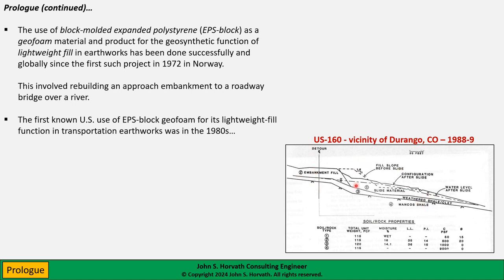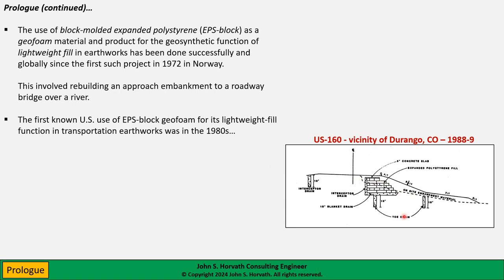That first U.S. use was on U.S. Highway 160 near Durango, Colorado, in the mountains. There were chronic slope stability problems, high seasonal groundwater, and a tendency for shallow slides. Engineers had a cycle of the roadway failing, rebuilding with soil, and failing again. They used blocks of EPS in conjunction with a positive drainage system to address the problem, and to the best of my knowledge it has performed well in the approximately 35 years since it was placed.